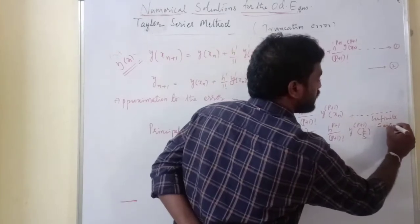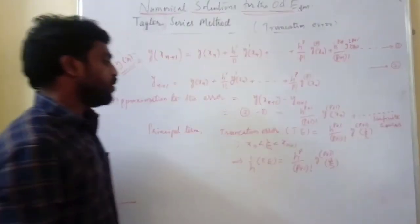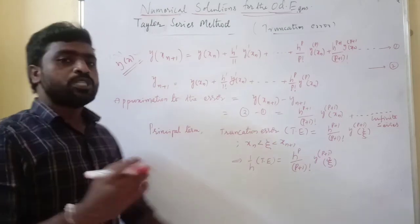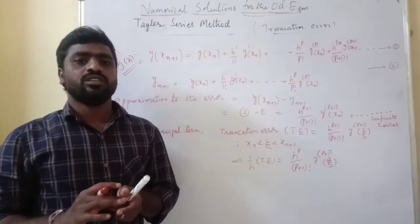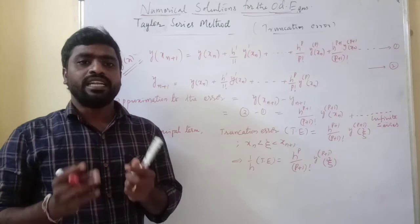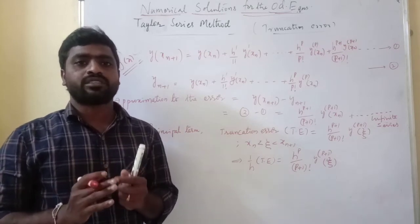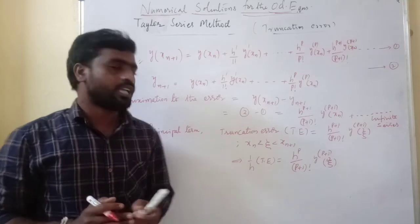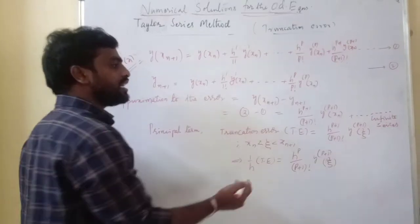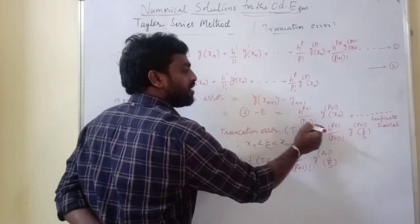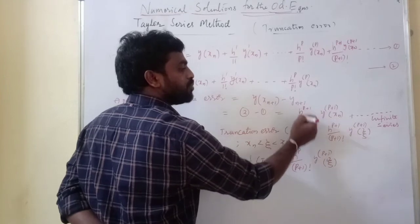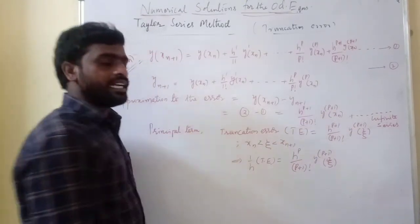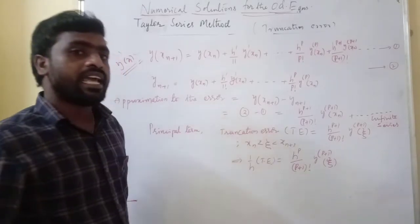In that infinite series, we identify the principal part, which means the leading term. The leading term of this infinite series is h to the p+1. That leading term, h to the p+1, is called the principal term, and it is what we call the truncation error.